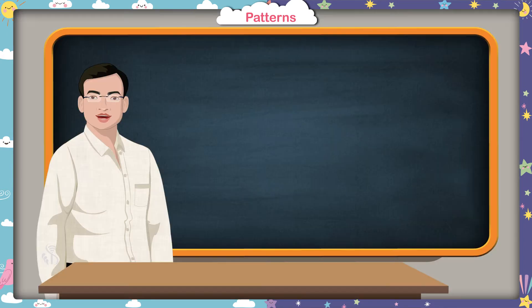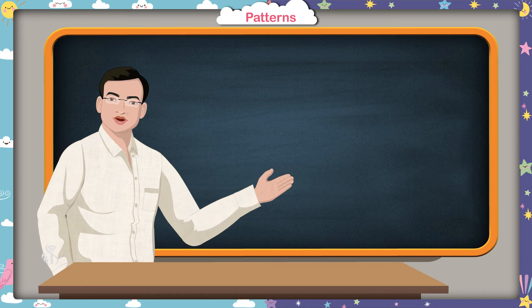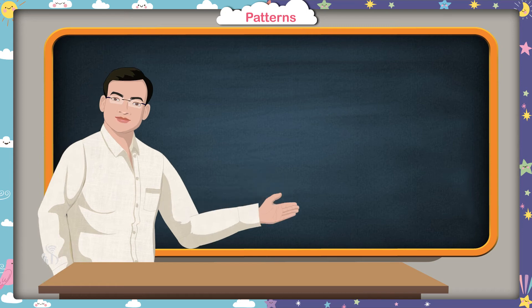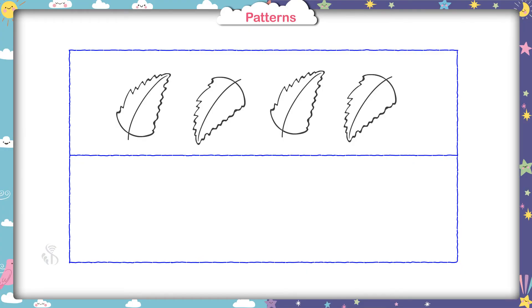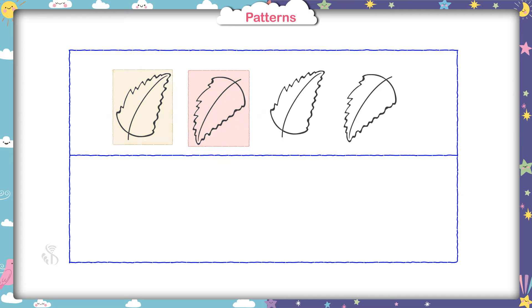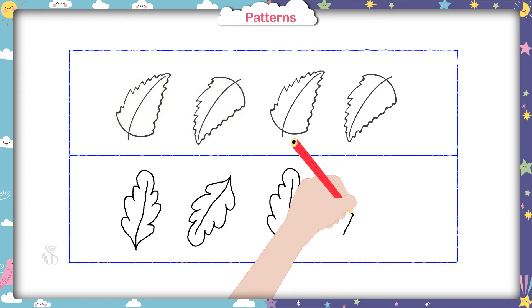Children, now you have to draw this next one. Here, some leaves are drawn in the picture. One leaf is straight, whereas the other leaf is upside down. Now you have to draw the leaves in the same order.